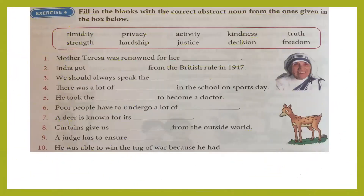Exercise 4: fill in the blanks with the correct abstract noun from the ones given in the box below. The box contains: strength, hardship, justice, kindness, and others — these are all abstract nouns we cannot see or touch but can imagine. You have to pick the correct abstract noun and put it in the correct blank. Read the sentence first, then think which word will fit. Try to guess on your own before checking the answers.